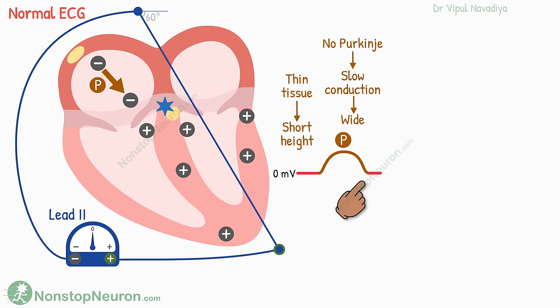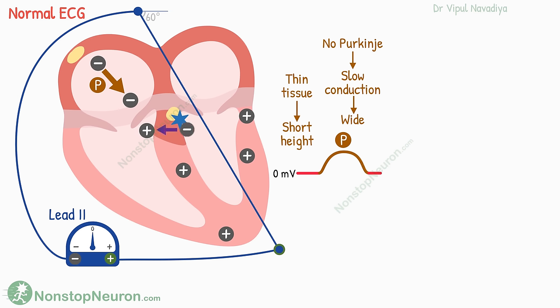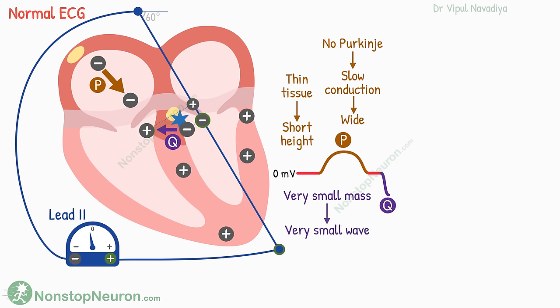After the P wave, we see a flat line during which the atria are contracting and the impulse is slowly traveling through the AV node. As no change is occurring in the polarity of the fibers, nothing is detected during this period. Then the impulse comes out of the AV node and starts depolarizing the ventricles. First, it depolarizes a tiny portion of the septum from left to right. The cells on the left side get depolarized first; projection of this current on Lead 2 shows the positive electrode near negative potential, so we get a negative wave — this is called the Q wave. Because it's produced by a very small mass of tissue, it's very weak and many times not even seen at all.